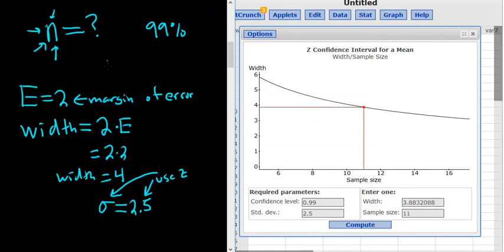Boom. There it is. N is equal to 11. That's how many people need to be surveyed.